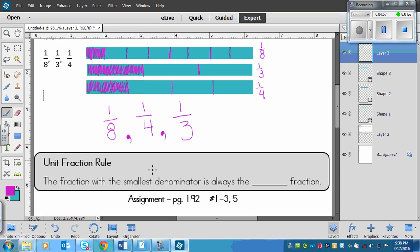So the fraction with the smallest denominator, and this is when it's a unit fraction only, the fraction with the smallest denominator is always the largest fraction. 1 3rd was the smallest denominator, and the largest fraction.